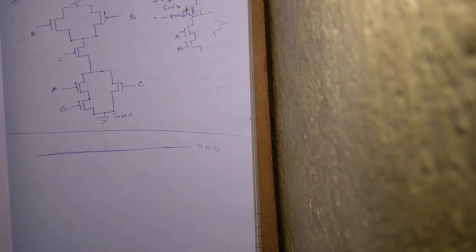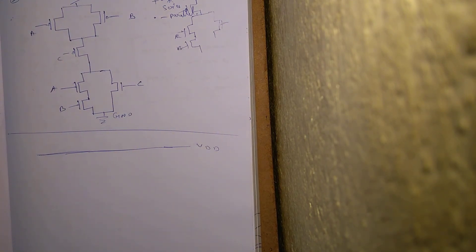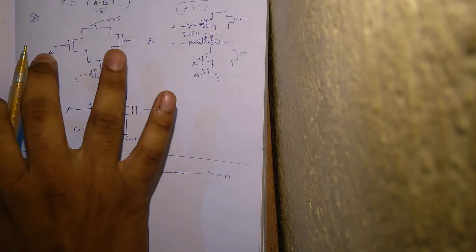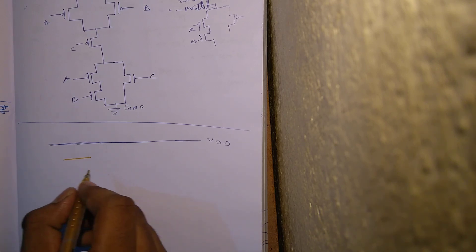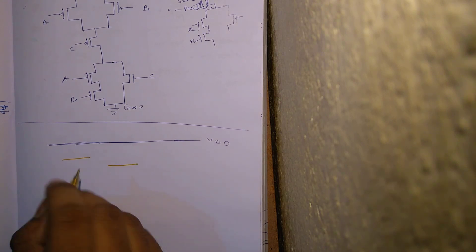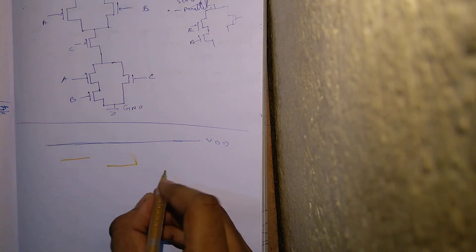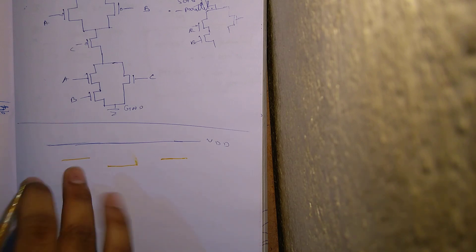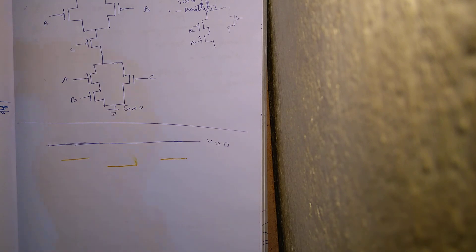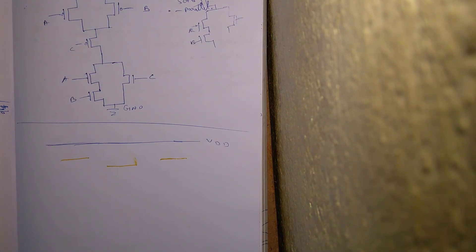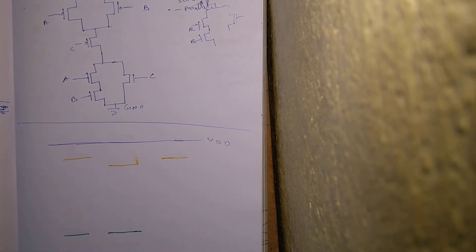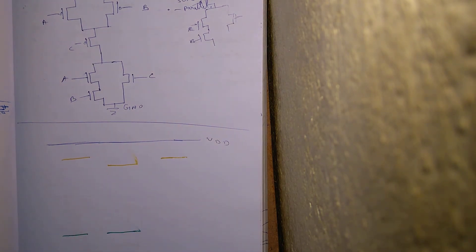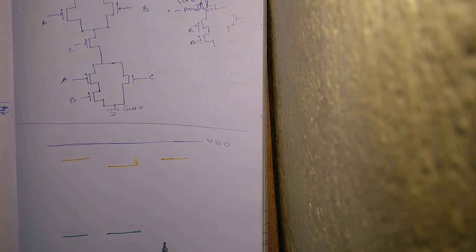For the pull-up network, for the PMOS transistor, for the P-diffusion region, we use a different layer. A and B are both in parallel, so I draw A and then, indicating parallel with some distance, I draw B a little lower. To these networks, C is in series, so this will be my C. For the pull-down network, A and B are in series, so they are drawn exactly beneath each other in the same line — this is A and this is B — and C is in parallel to both A and B, so I show some distance and draw C beneath.